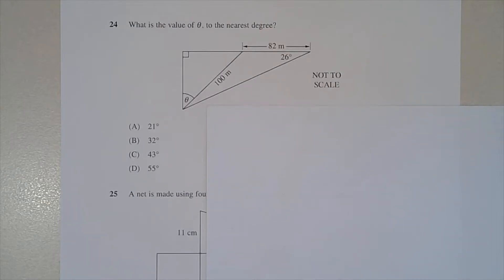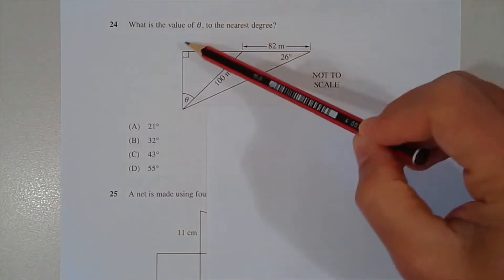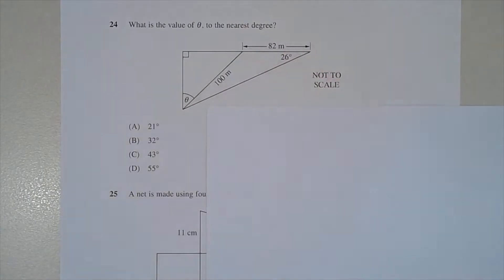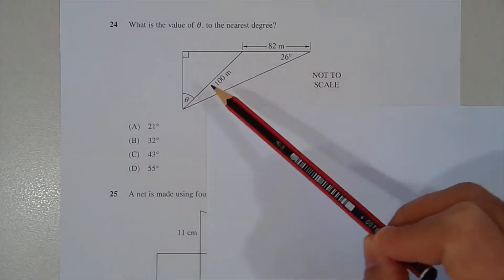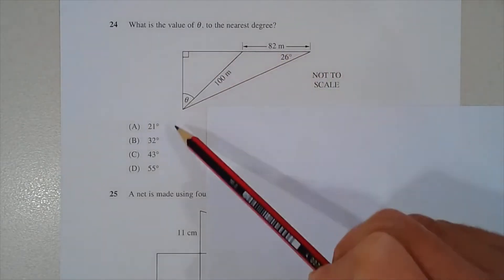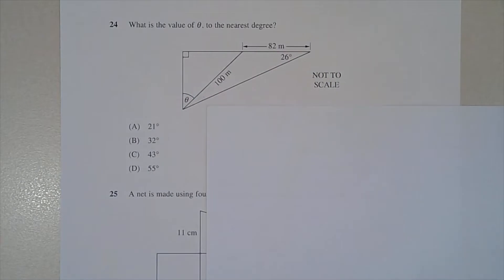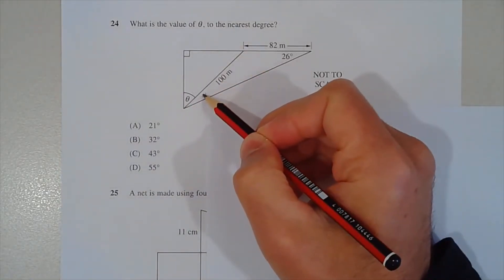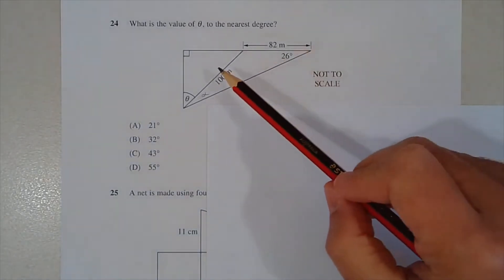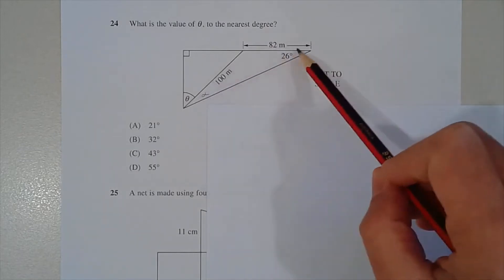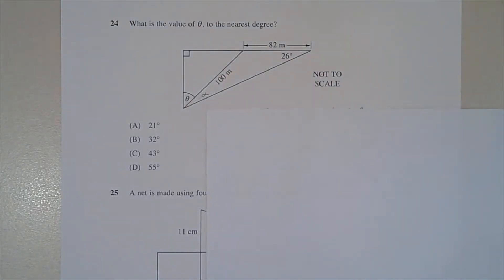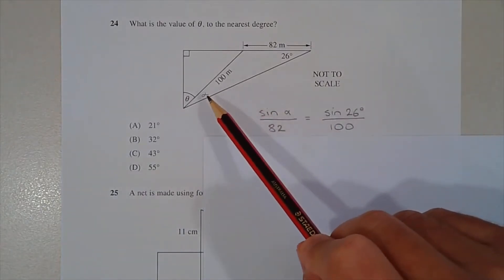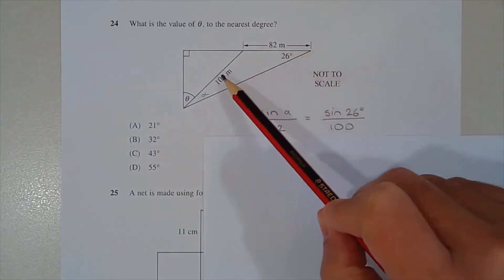Question 24: what is the value of theta to the nearest degree? We have a right angle triangle containing a non-right angle triangle, with two known sides and a known angle. To find theta we first find angle alpha inside the non-right triangle. We have a known side-angle pair, so we use the sine rule: sin α / 82 = sin 26° / 100.